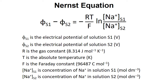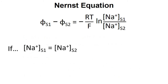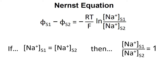The magnitude of the potential difference across the membrane is given by the Nernst equation. The particular form we need is: the electrical potential of solution S1 minus the electrical potential of solution S2 equals minus RT over F, multiplied by the natural log of the ratio of concentrations — sodium concentration in solution S1 divided by sodium concentration in solution S2.